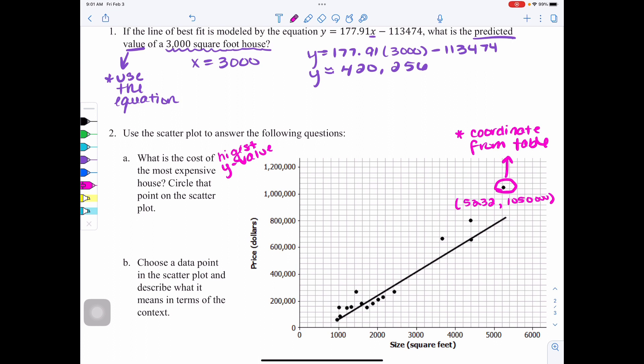Over here, I circled it. What is the price of the most expensive house? It's going to be $1,050,000.